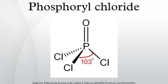The P=O bond does not utilize the d orbitals on phosphorus, as is commonly described in older textbooks, since quantum chemical calculations have shown that d orbitals are not involved in main group chemical bonding. More modern texts favor a description involving donation of the lone pair electrons from oxygen p orbitals to the antibonding phosphorus–chlorine bonds, thus constituting p–p bonding.